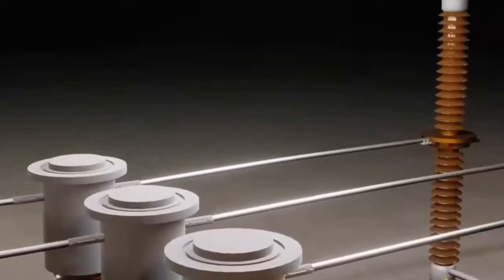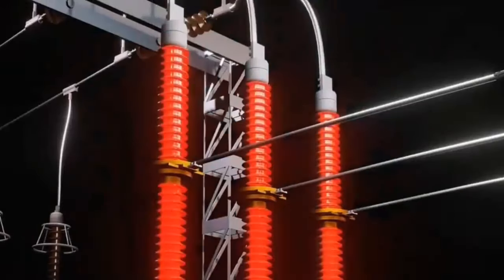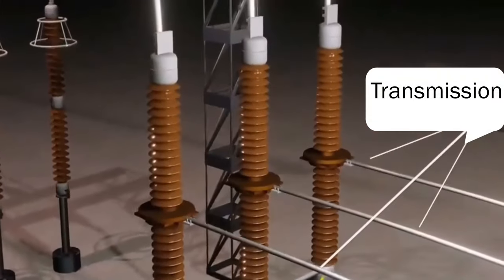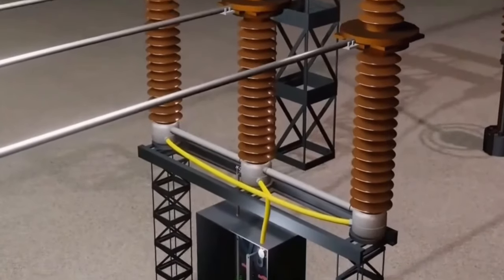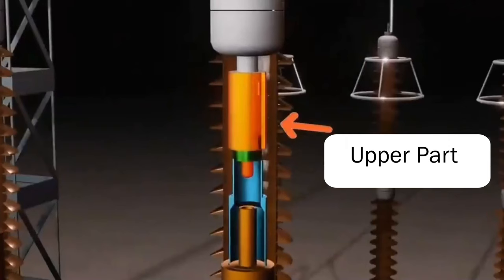To solve this problem, engineers invented the sulfur hexafluoride circuit breaker. Let's see how it works. The upper part of the circuit breaker is connected to one end of the transmission line, the middle part is connected to the other end of the transmission line, and the lower part is connected to the controller of the circuit breaker through a mechanical device.